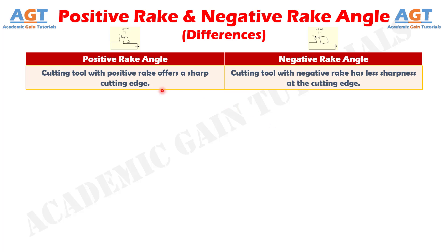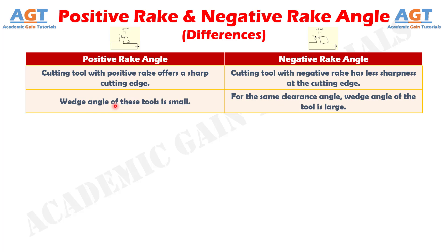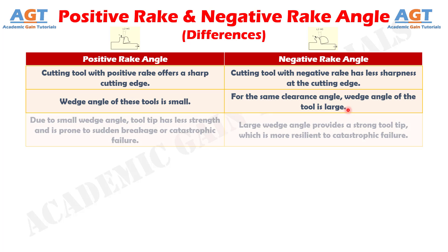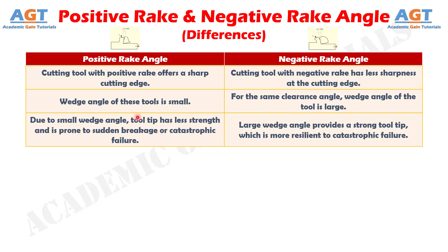Difference number 1: A cutting tool with positive rake offers a sharp cutting edge, whereas a cutting tool with negative rake has less sharpness at the cutting edge. Number 2: Wedge angle is small for positive rake, whereas for the same clearance angle in negative rake, the wedge angle of the tool is large. Number 3: Due to small wedge angle in positive rake, the tool tip has less strength and is prone to sudden breakage or catastrophic failure, whereas in negative rake, the large wedge angle provides a strong tool tip which is more resilient to catastrophic failure.